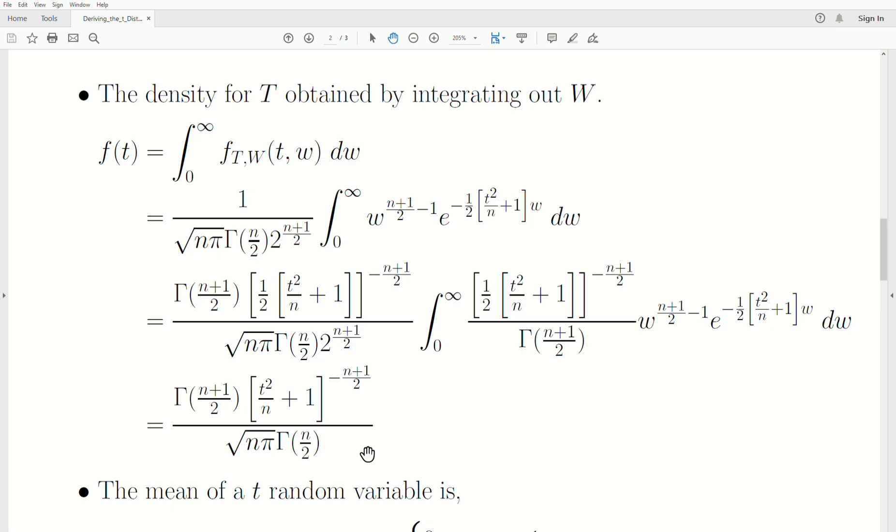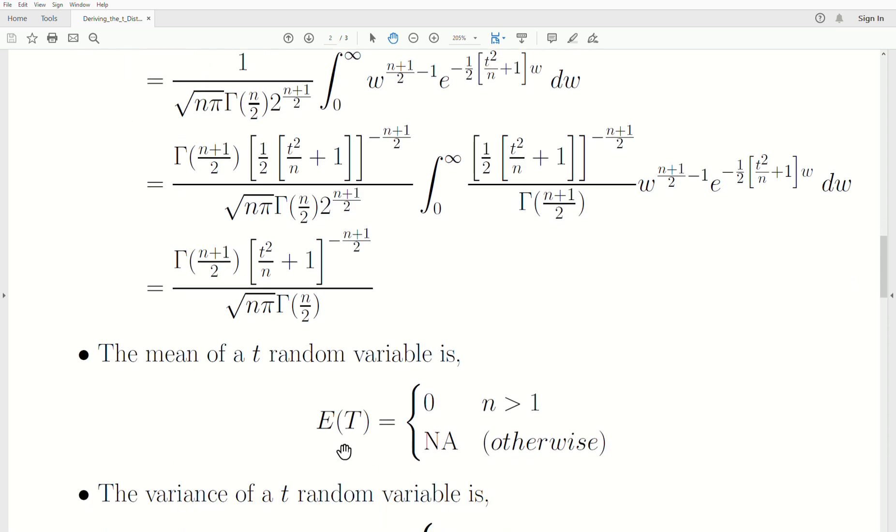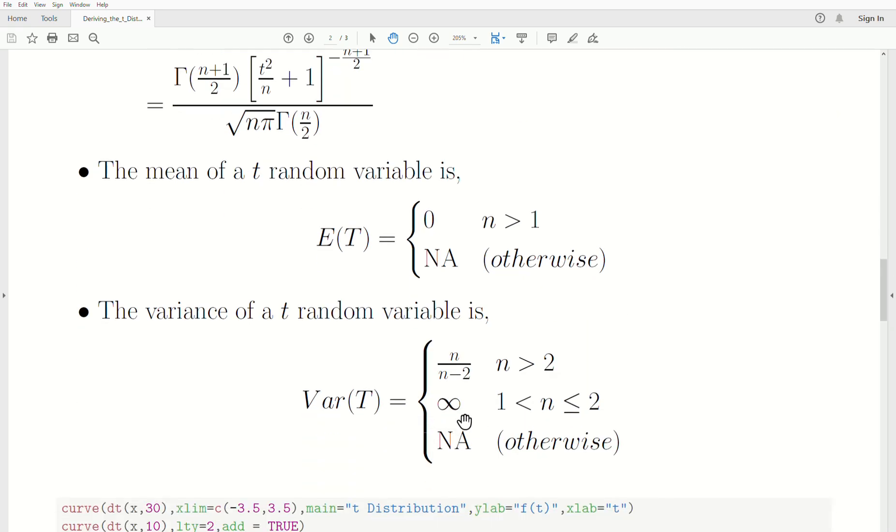Now we're not going to prove it in this video, but in a later video, the mean of a t random variable is zero, assuming that n is greater than one, otherwise it's undefined. The variance of a t distribution is this: it's n over n minus 2, assuming the degrees of freedom is strictly greater than 2. It's infinity when it's greater than one and less than or equal to two, and it's undefined otherwise.